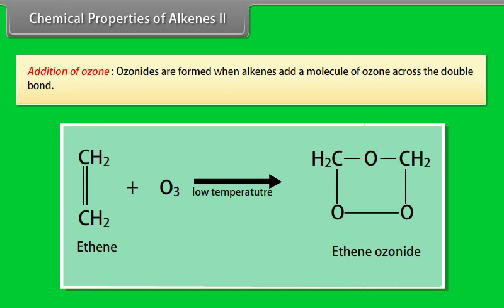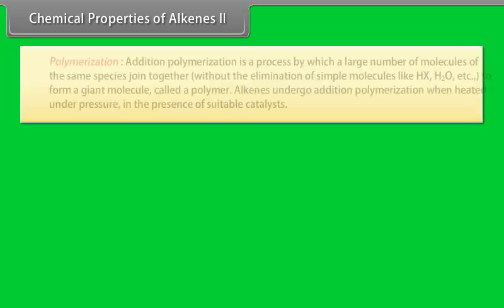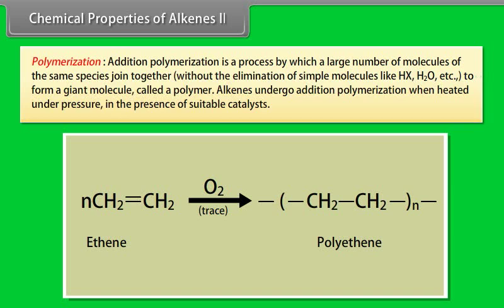Addition of ozone: ozonides are formed when alkenes add a molecule of ozone across the double bond. For example, ethene gives ethene ozonide. Polymerization: addition polymerization is a process by which a large number of molecules of the same species join together without the elimination of simple molecules like HX, H2O, etc., to form a giant molecule called a polymer. Alkenes undergo addition polymerization when heated under pressure in the presence of suitable catalysts. When ethene is heated to 1000 degrees centigrade under 1000 atmospheric pressure in the presence of oxygen, we get polyethene.